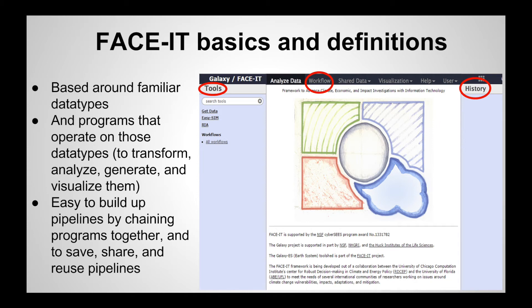FaceIt is also built around various archives of rich collections of programs that can operate on these data types. These operations can be anything from transforming, converting, analyzing, or actually the operations that generate the data – such as crop models themselves – and then visualization and all sorts of other things. The central principle is that it's easy to take these tools, chain them together, and create reusable pipelines that you can save, publish, and share, to really create a diverse community around your workflows.